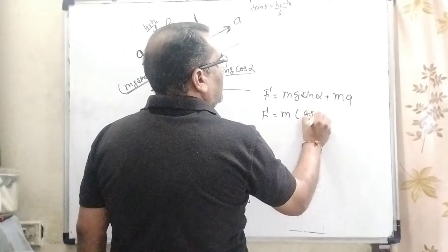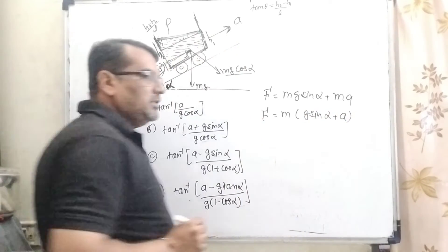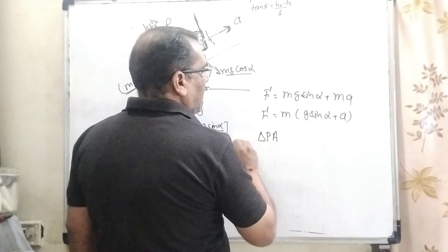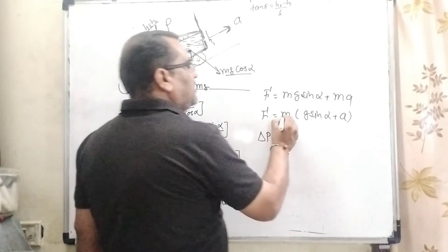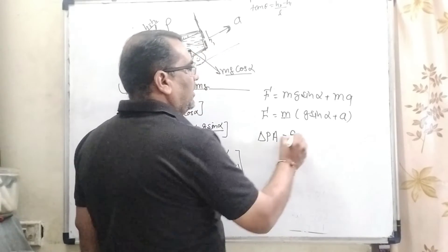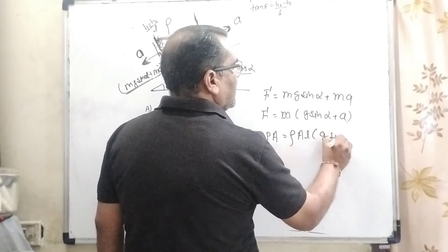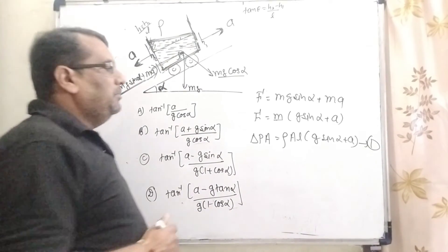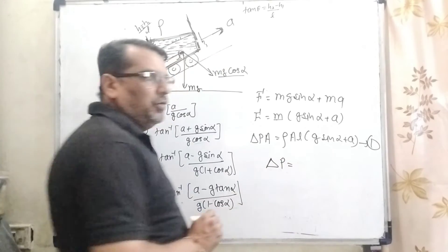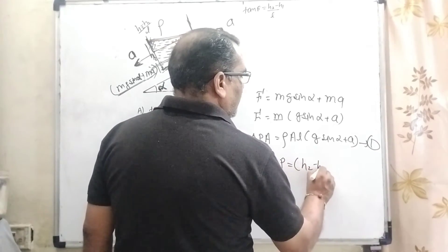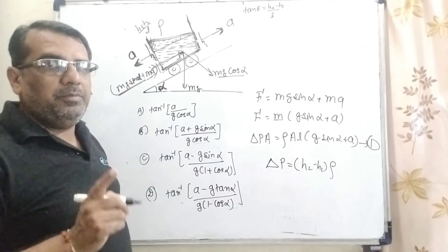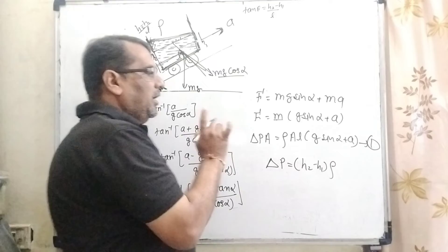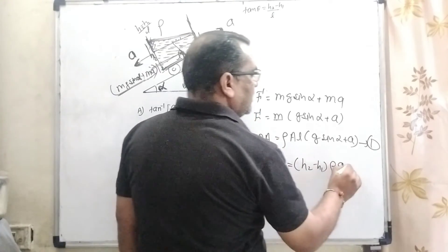Here force equals mg sin alpha plus ma, and taking m common gives m times (g sin alpha plus a). Now, what is the relation of force and pressure? Pressure means change in pressure delta p times area. Mass can be written as volume times density rho, and volume is area times L. Using Pascal's law, change in pressure delta p equals (h2 minus h1) times rho times g cos alpha, since the effective gravity component perpendicular to the incline is g cos alpha.